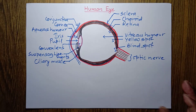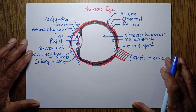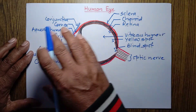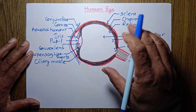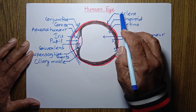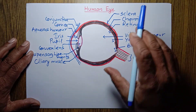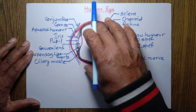This is the complete labeling. Now let's talk about each part of the eye briefly. Sclera — the outermost layer of our eyeball is called sclera. It protects our eye and it is a little elastic.